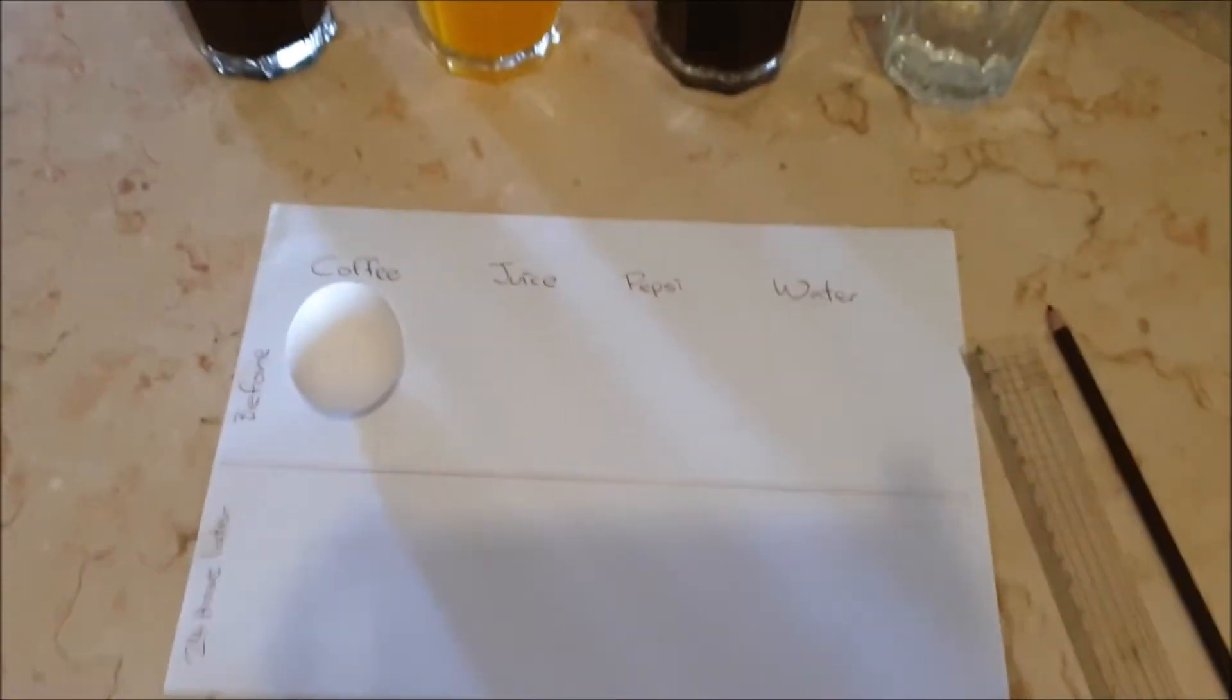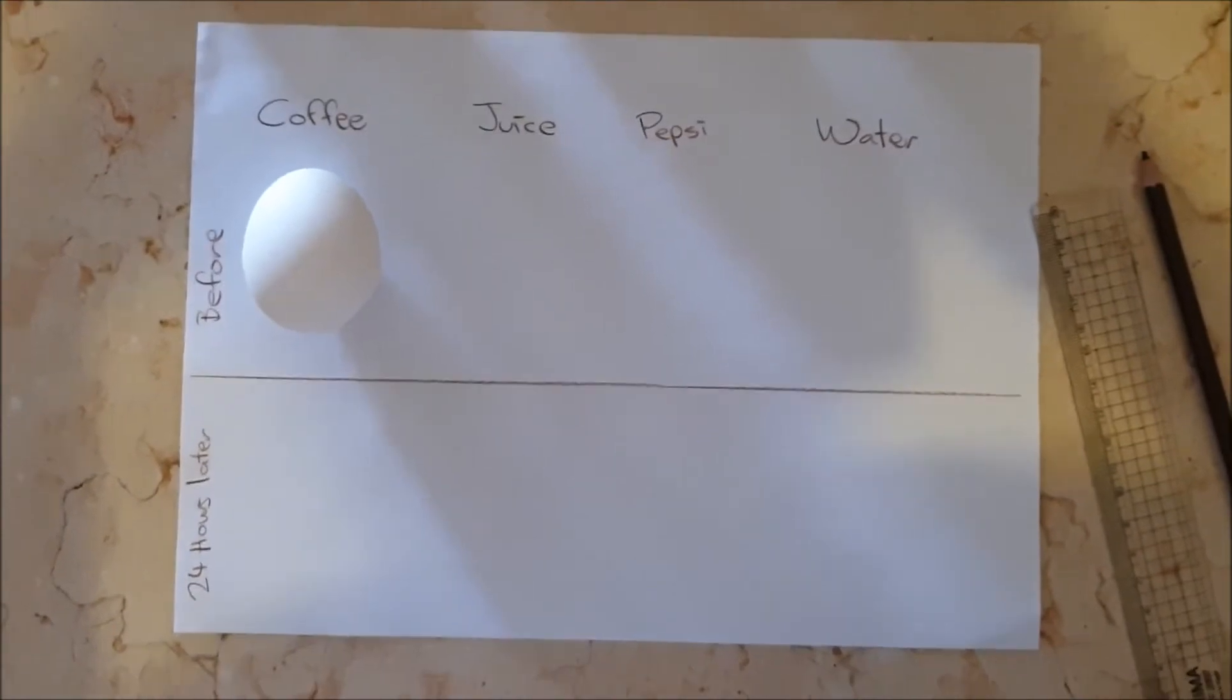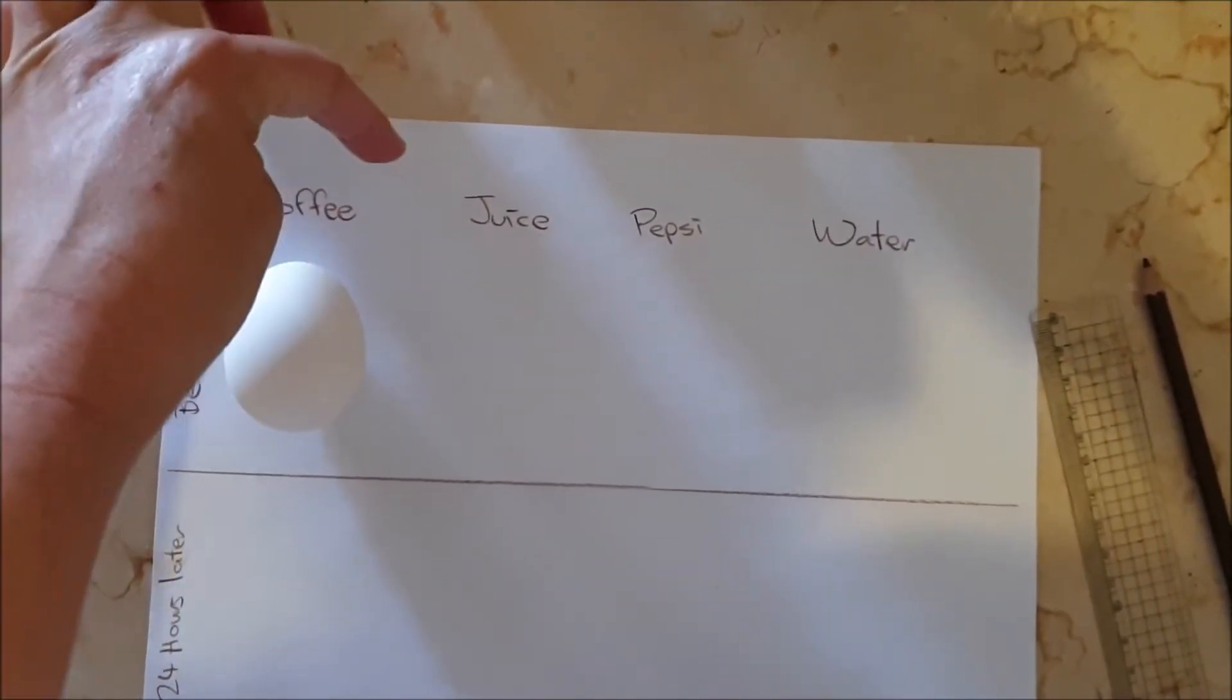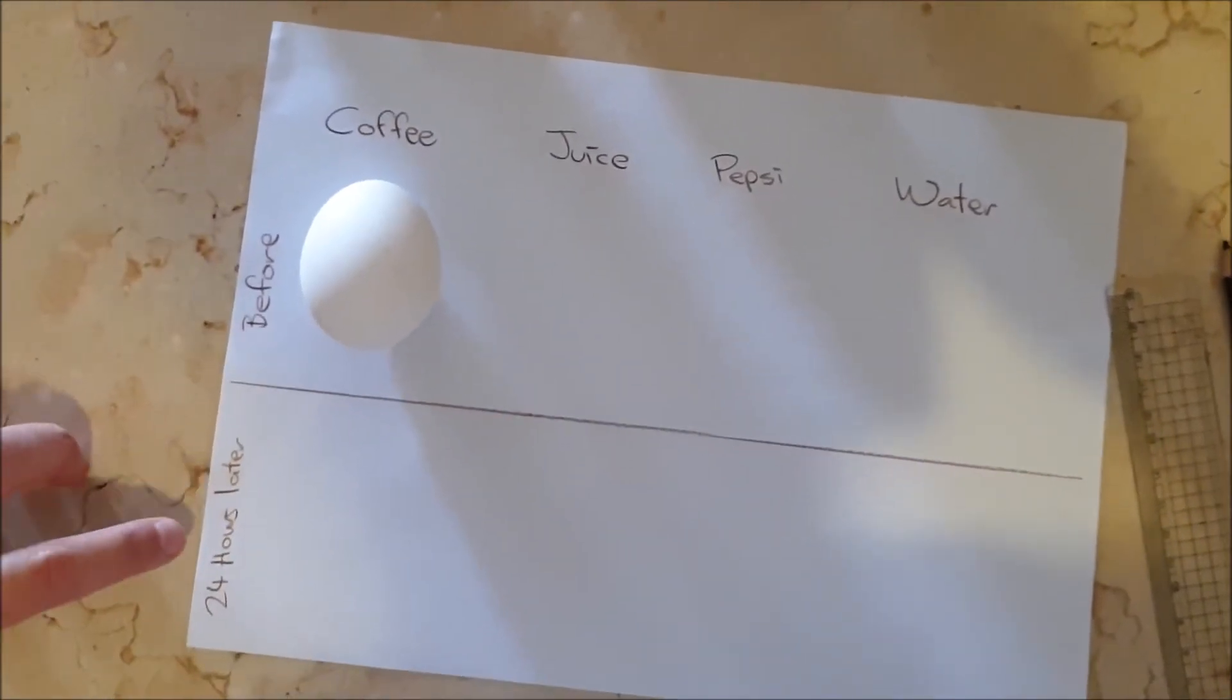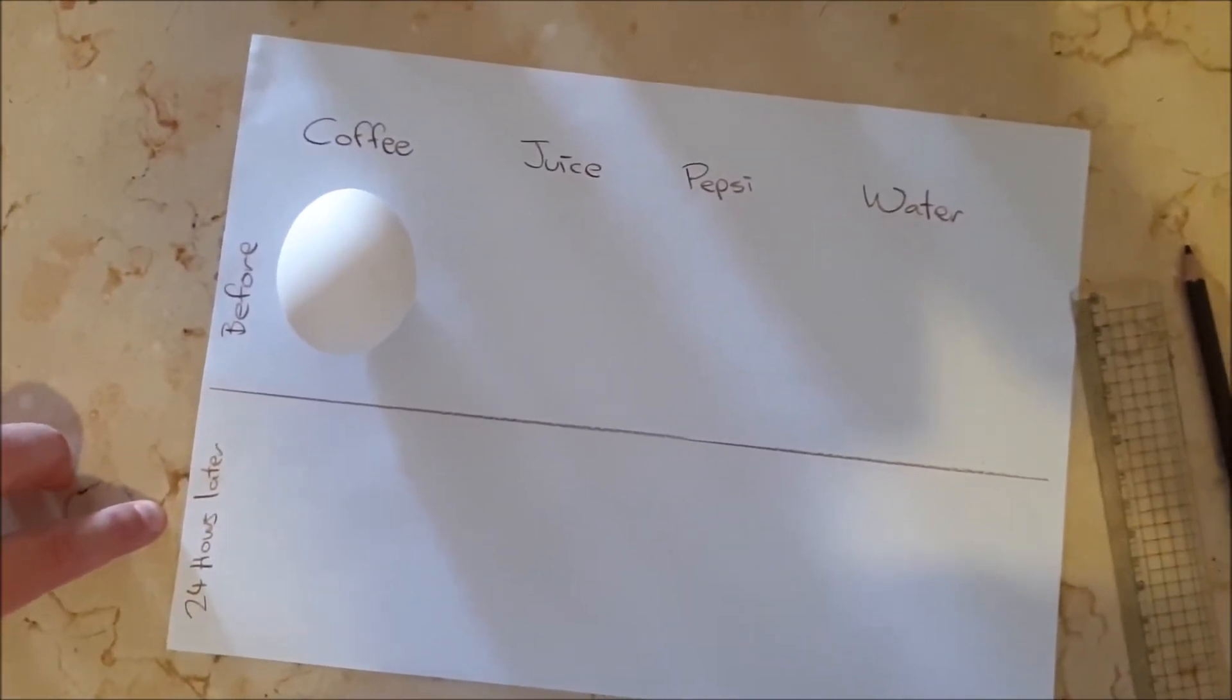After that, we need to prepare our page. So we have coffee, juice, Pepsi, water. Now we're going to do two different measurements. We're going to do a before measurement and 24 hours later measurement about the eggs.